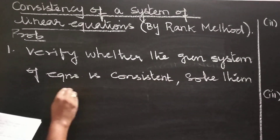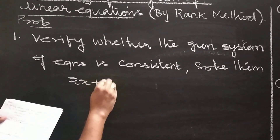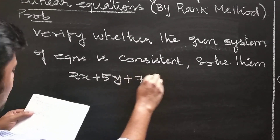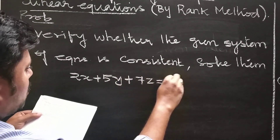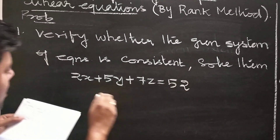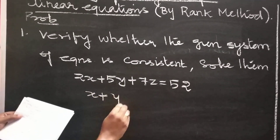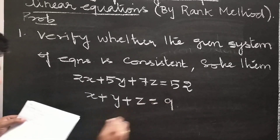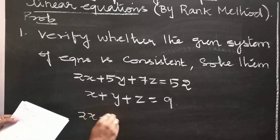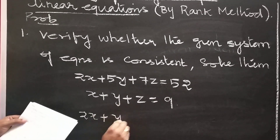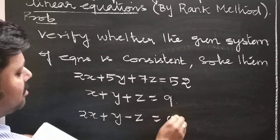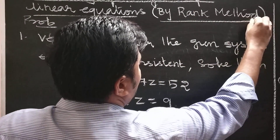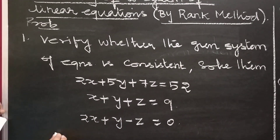The given system of equations: 2X + 5Y + 7Z = 52, X + Y + Z = 9, 2X + 5Y − Z = 0. Verify whether the system is consistent; if so, solve them by rank method.